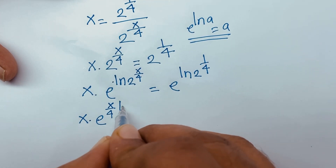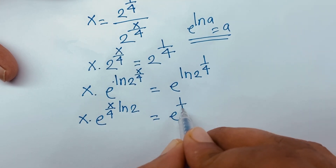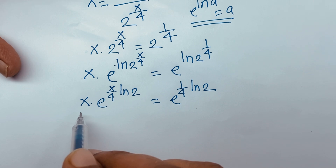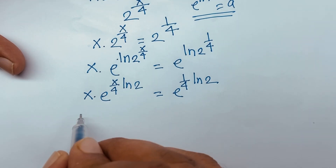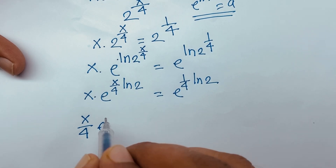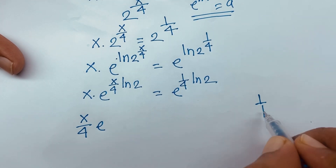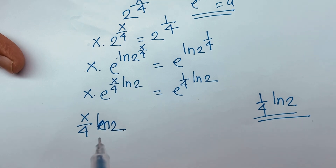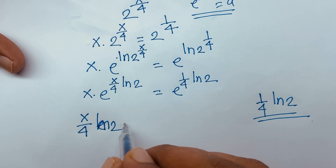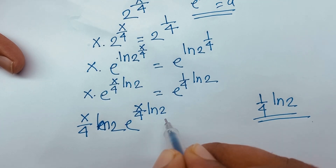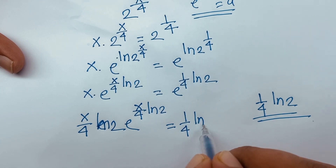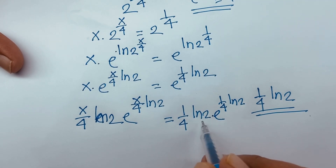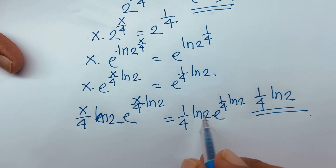So it will be x over 4 times ln 2 is equal to e to the power 1 over 4 ln 2. Then if I multiply both sides by 1 over 4 ln 2, I can say x over 4 ln 2 times e to the power x over 4 ln 2 is equal to 1 over 4 ln 2 times e to the power 1 over 4 ln 2. So here we have 1 over 4 ln 2 on this side.